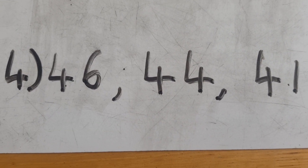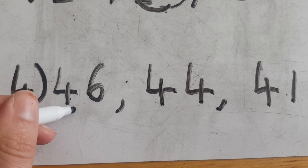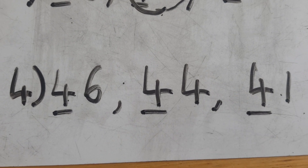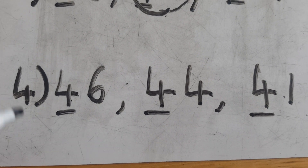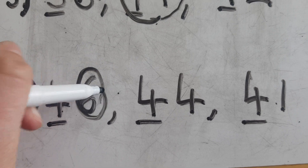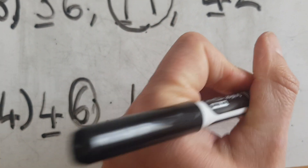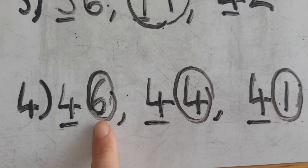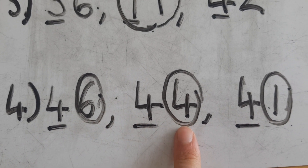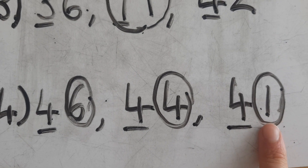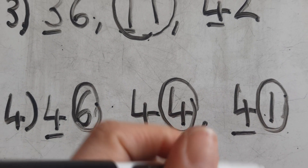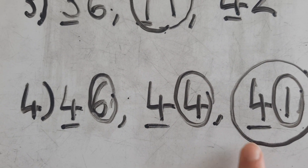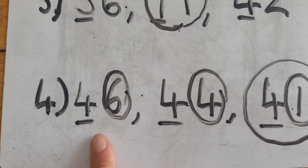It's exactly the same if your tens are the same. Let me underline those tens. I've got four tens in all of these numbers, so that is no use to me. I'm going to have a look at the ones instead. Remember, I'm looking for the smallest number. I've got six ones, four ones and one one. That number one is the smallest, so I'm going to circle that one. 41 is smaller than 44 and 46.